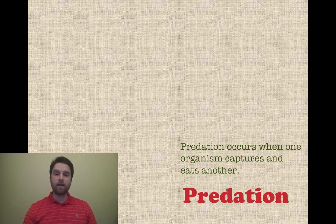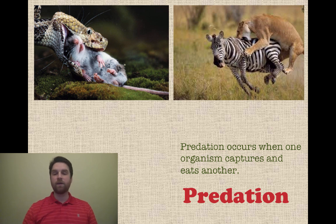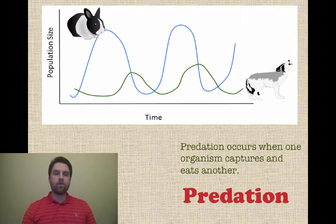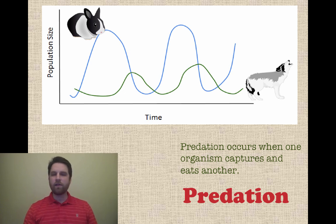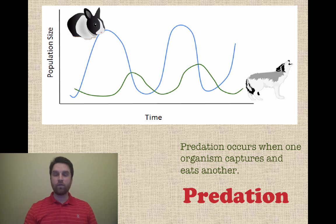Predation is another way that organisms interact with one another. That occurs when one organism captures and eats another. Mostly carnivores are what we're looking at here. The predator is the organism that's attacking, and the prey is what is being attacked. If we look at a graph of a wolf and a bunny and their population size over time, the wolf's population is very low when the population of the bunny is very high. As the bunny population starts going down, the wolf population starts coming up. This is a very clear predator-prey situation, with the predator being the wolf.